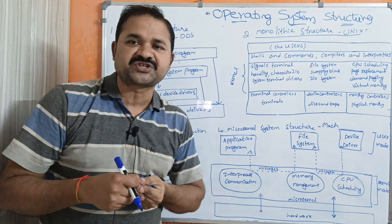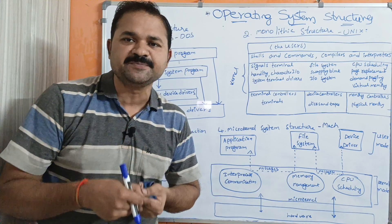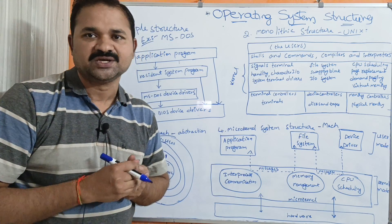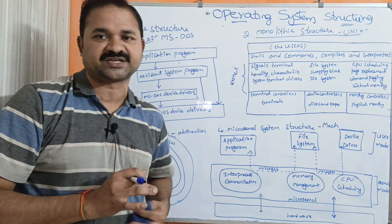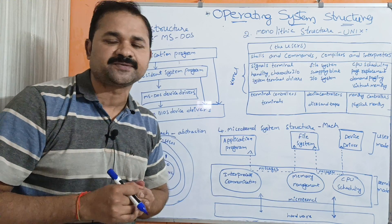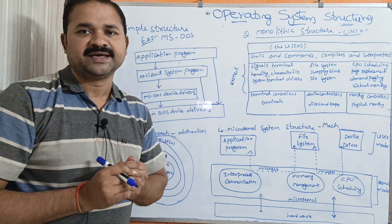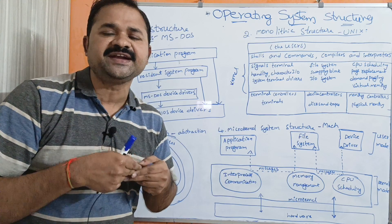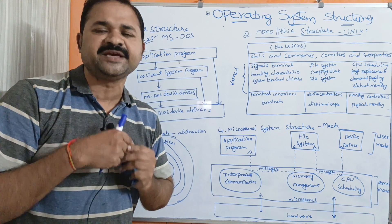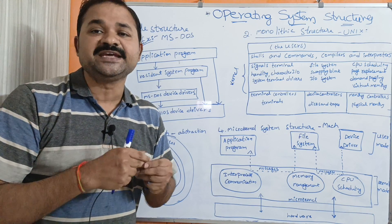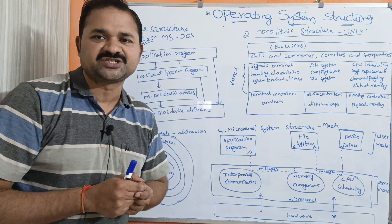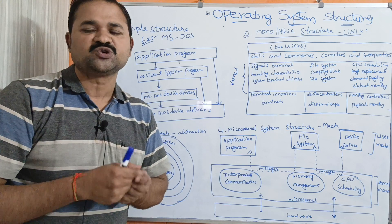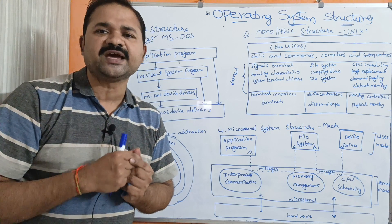The first one is simple structure. The best example for simple structure is MS-DOS. Here there is no well-defined structure and there are no modules — everything is placed in a single module. The major advantage of MS-DOS is that in less space we can implement the functionality. But the major disadvantage is it is a single programming system, meaning the CPU can execute only one program at a time.